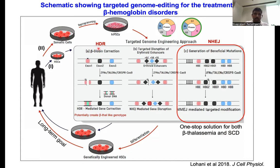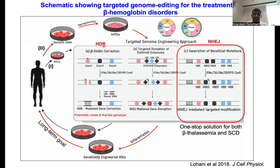The limitation of homology-directed repair is that it's a two-step process: you need to make a targeted double-strand break and then use HDR to insert the donor DNA. Non-homologous end joining can happen throughout the cell cycle, but HDR only happens in the late S and G2 phase — so the gene correction efficiency of HDR is somewhat less compared to NHEJ.